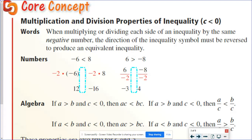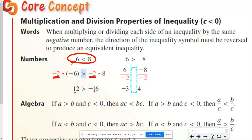However, if I take the same problem — negative six is less than eight — and multiply both sides by negative two, I get 12 on the left and negative 16 on the right. But 12 is not less than negative 16. When you multiply by a negative, it actually flips the inequality sign, and the same thing happens with division. If six is greater than negative eight and I divide both sides by negative two, I get negative three on the left and positive four on the right, and those signs flip.